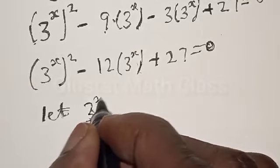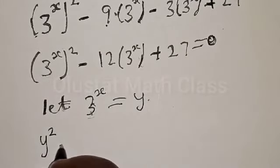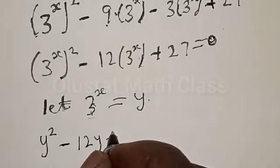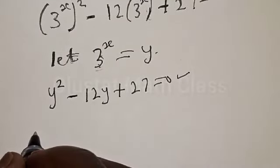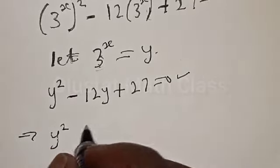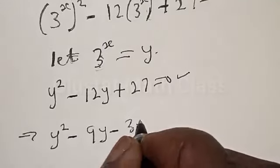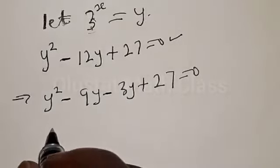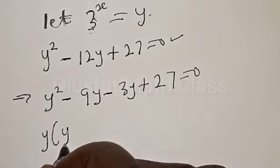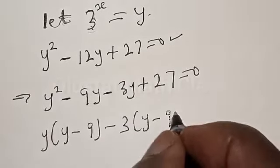Let 3 raised to the power x equal to y. Therefore, we have y squared minus 12y plus 27 equal to 0. This is a quadratic equation; let's solve by factorization method. We have y squared minus 9y minus 3y plus 27 equal to 0. That is, minus 9 times minus 3 gives plus 27, and minus 9 minus 3 gives minus 12.